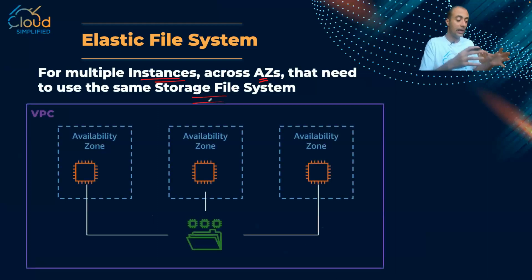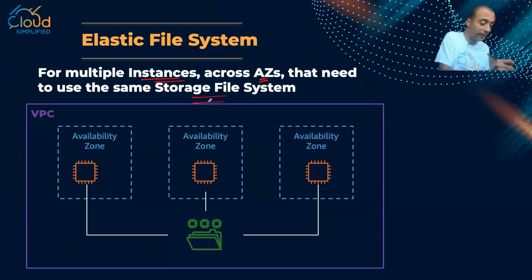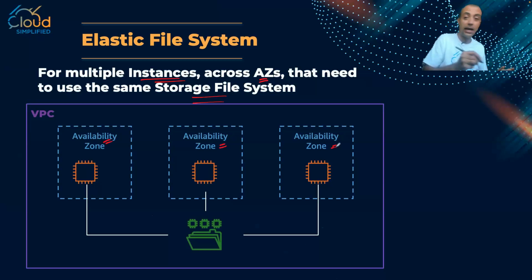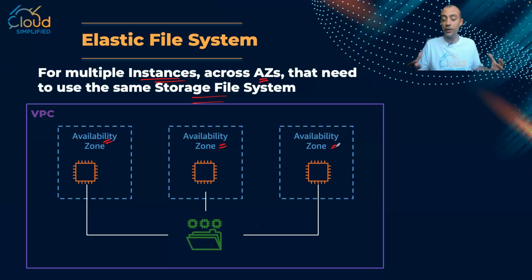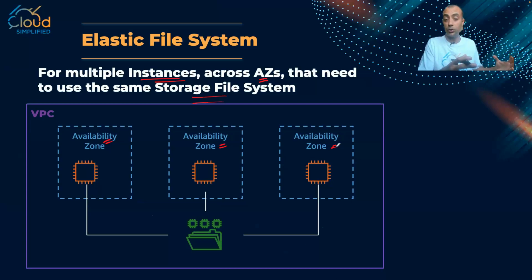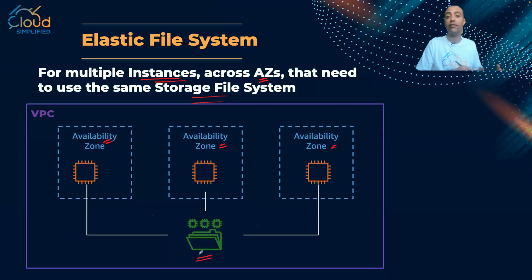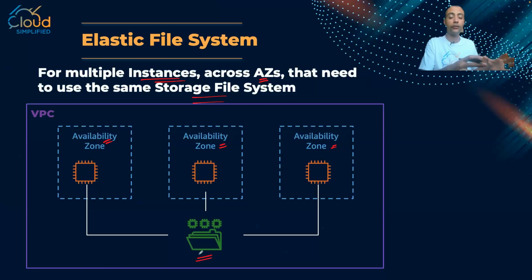That's exactly how it looks. Inside my VPC, I have multiple availability zones. For high availability, I have multiple EC2 instances across multiple availability zones, but all of these EC2 instances can access this shared file storage from EFS.